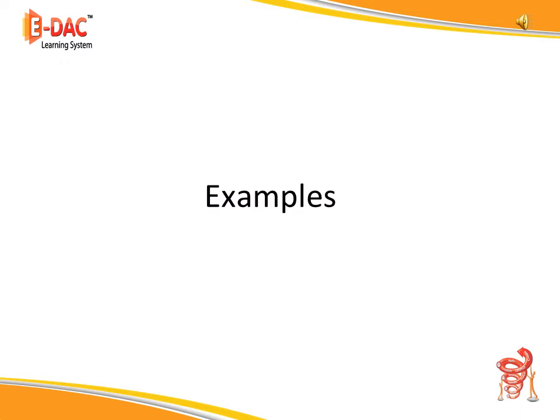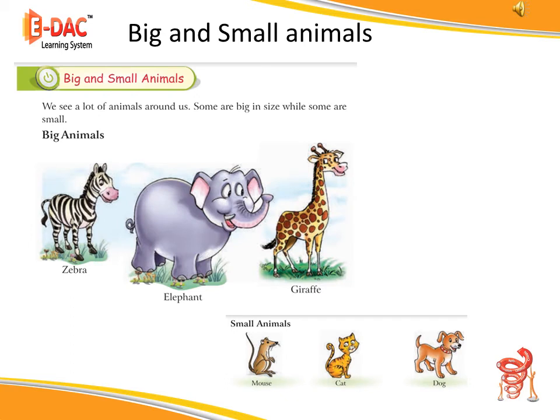Let us now understand the concept with some more examples. Big and small animals. We see a lot of animals around us. Some are big in size while some are small. Big animals: zebra, elephant, giraffe. Small animals: mouse, cat, dog.